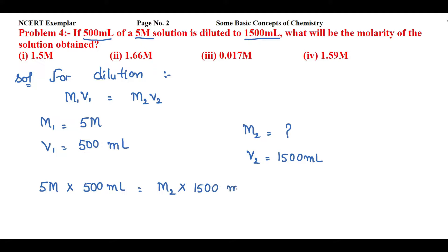Now to find the M2 value, I will take M2 on one side of equal to and 1500 on the other side of the equal to. So 5 molar into 500 mL divided by 1500 mL.